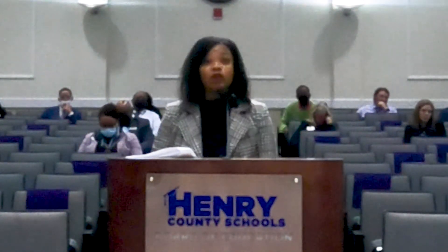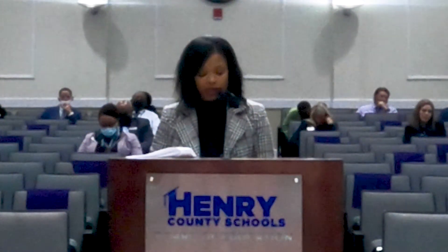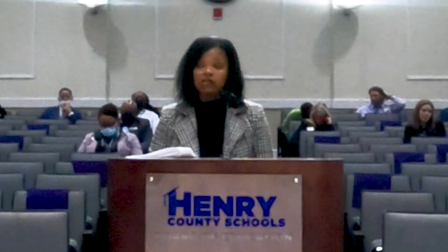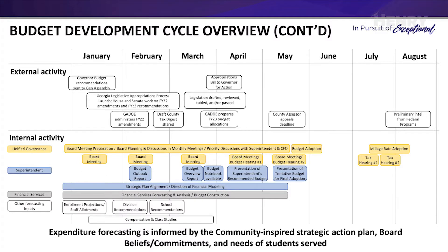As the General Assembly and local tax officials complete work that informs revenue forecasting and provides intel on potential new costs associated with legislation, the superintendent directs a series of internal tasks to develop allocation recommendations that support student learning at the highest levels. There are multiple opportunities for board members to share budgetary priorities that inform the superintendent's budget recommendations. The work of the board and prior boards has resulted in intentional investments in salaries, instructional resources and supports, and safe and secure learning environments.